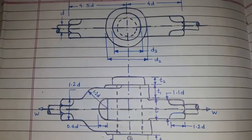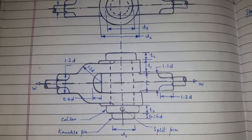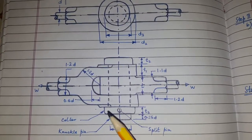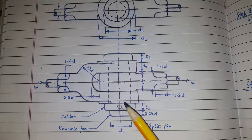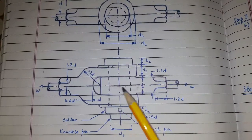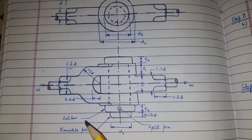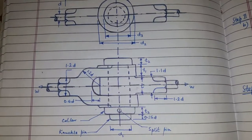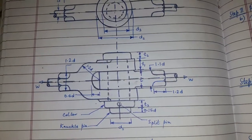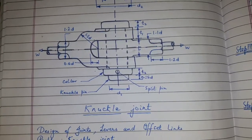Hi friends, today's topic of discussion is design of knuckle joint. Here you can see the diagram of knuckle joint. This is the knuckle pin and this is the collar split pin. This is the double eye and this is the single eye, and you can see various dimensions of different parts of the knuckle joint. Now we will see the design of knuckle joint, which is from the chapter design of joints, levers and offset links.